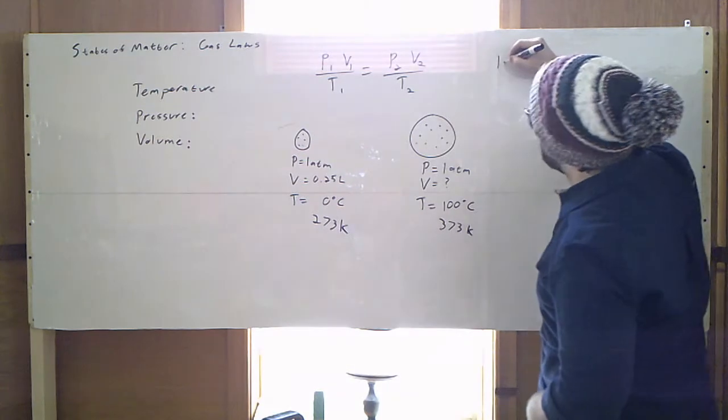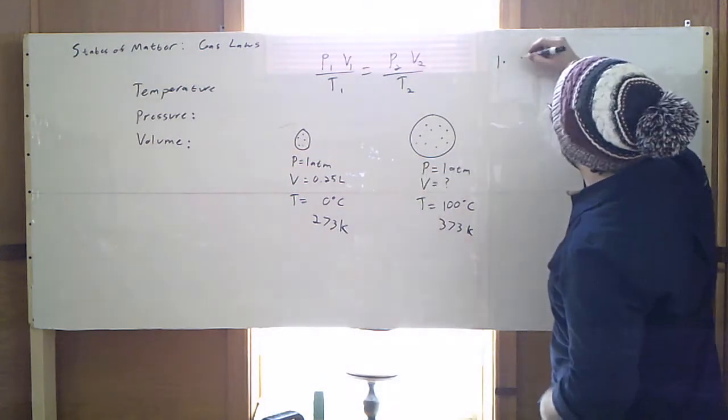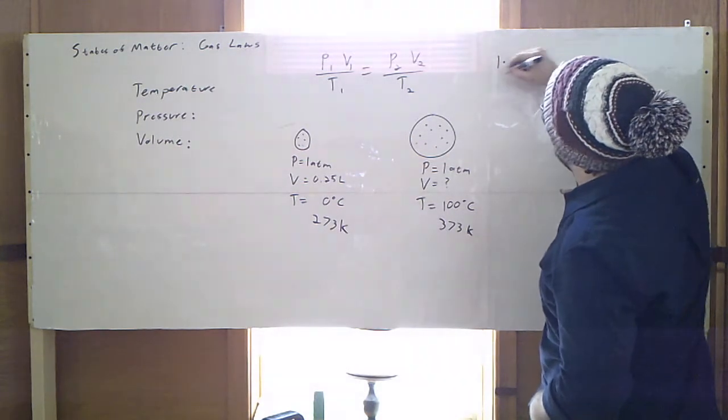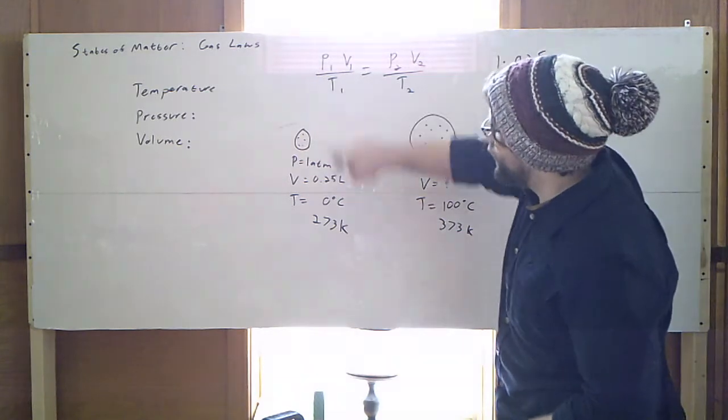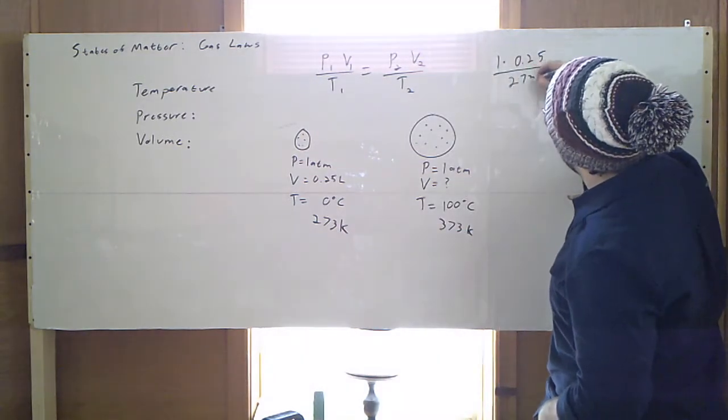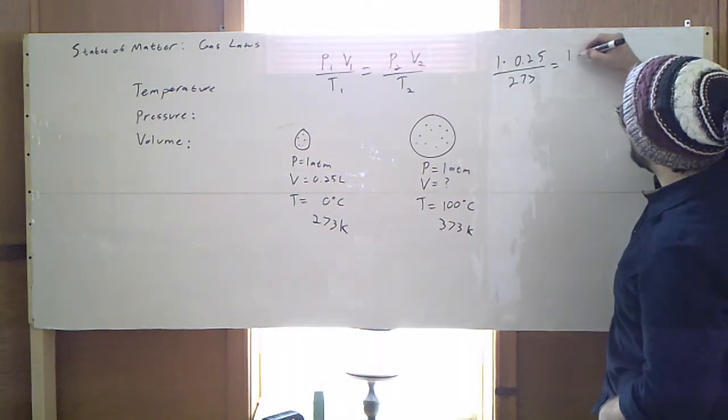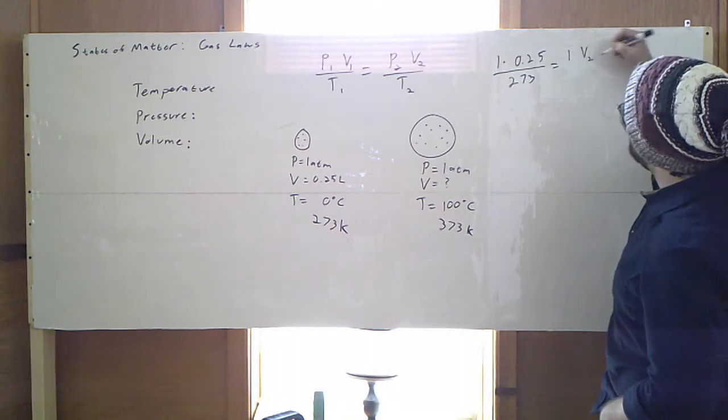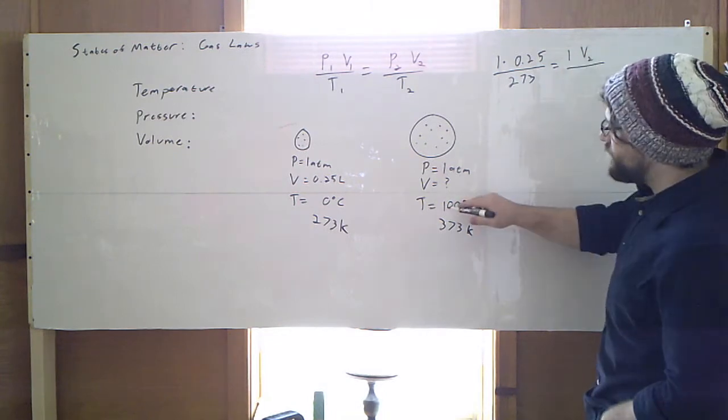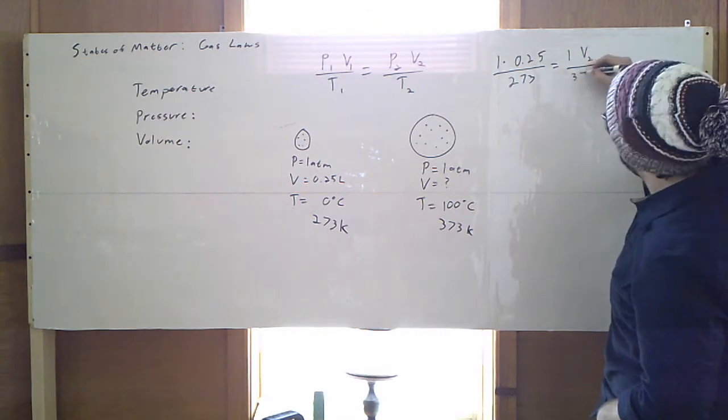P1, that's going to be 1 times V1, which is 0.25, divided by T1, which is 273. That's going to be equal to P2 is going to be 1 again. V2, we don't know, divided by temperature of 373.